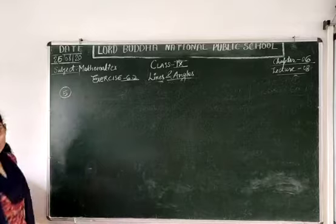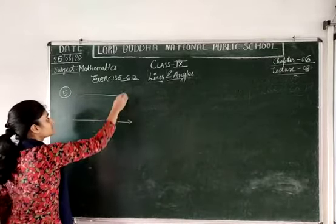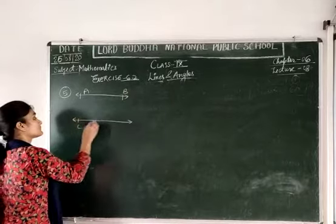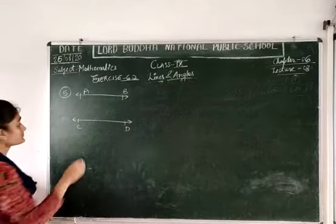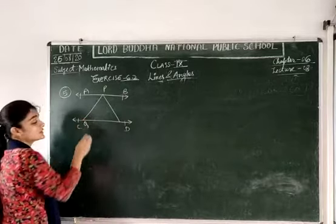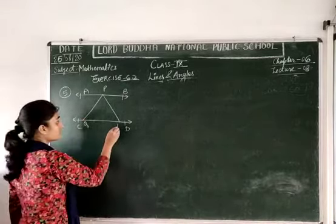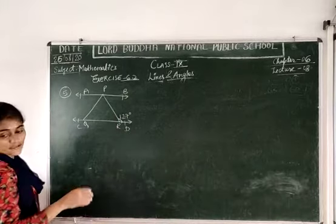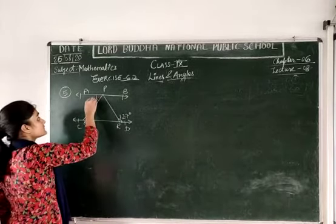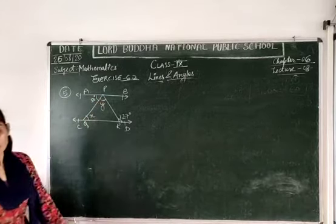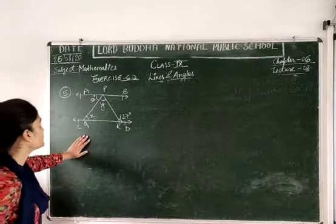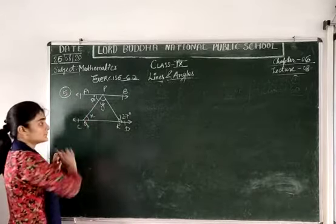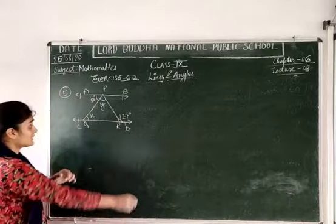Let's move to question number 5. Two parallel lines AB and CD are given. There are three points P, Q, and R. The angle given is 127 degrees, another is 50 degrees, and you have to find the values of X and Y. AB is parallel to CD — this much is given.